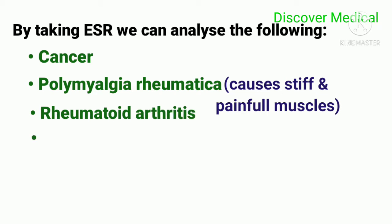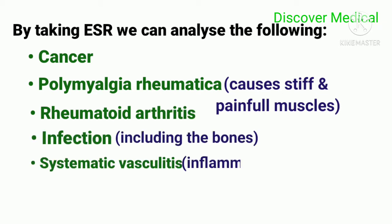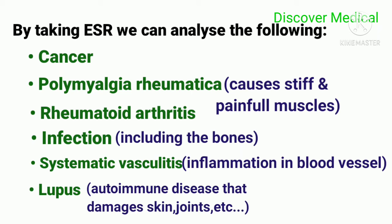ESR can also help detect infections including bone infections, systemic vasculitis — which is inflammation in blood vessels — and lupus, which is an autoimmune disease that damages the skin, joints, and other parts of the body.